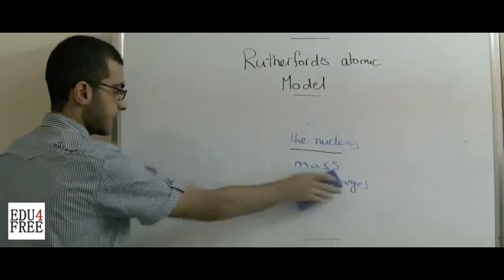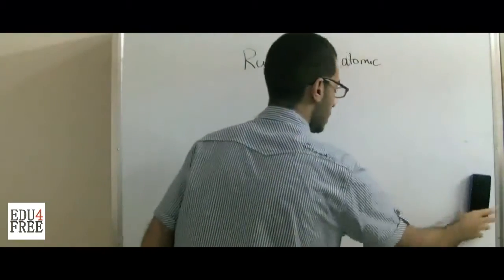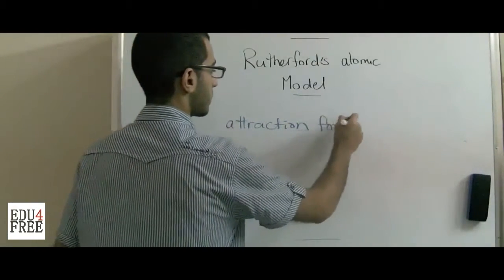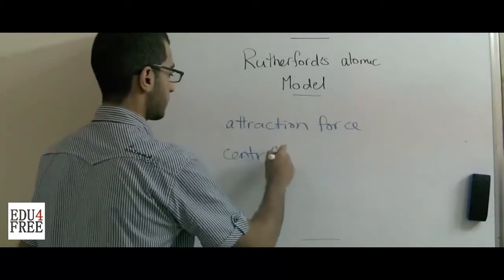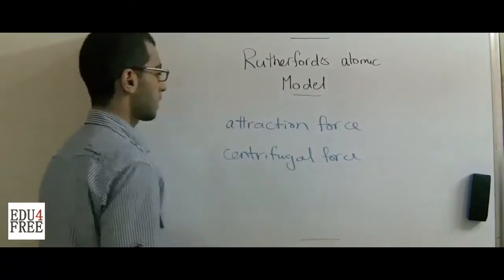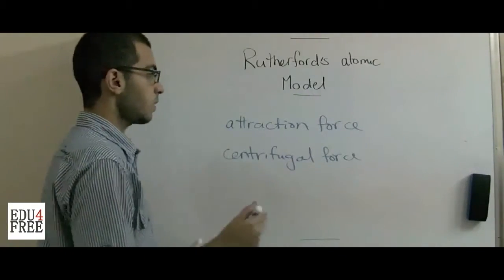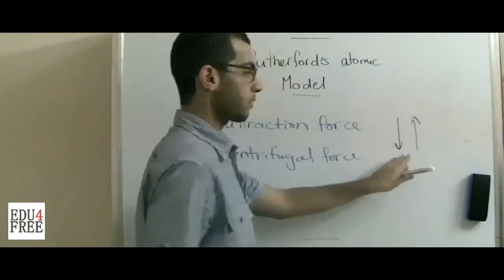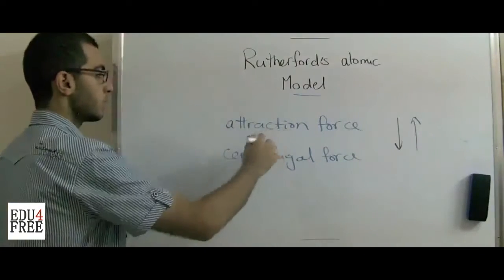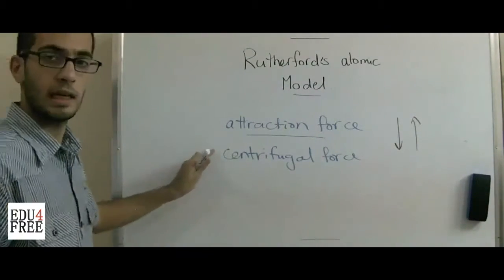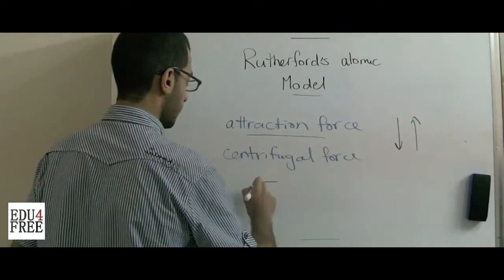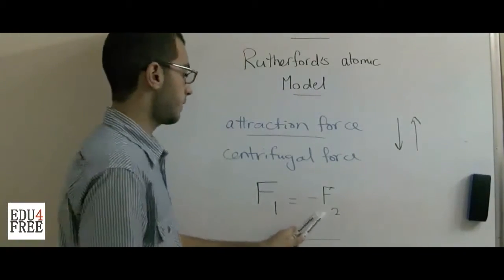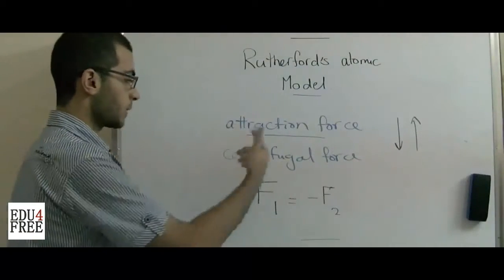There are two forces which affect this rotation around the nucleus. First, the attraction force. And the centrifugal force. The nucleus has an attraction force which attracts the electrons inwards, and there is a centrifugal force which throws the electrons away from the nucleus. The amount of centrifugal force is equal to the amount of the attraction force and opposite in direction — as in Newton's second law of force, F1 equals negative F2. This keeps the electrons orbiting around the nucleus.